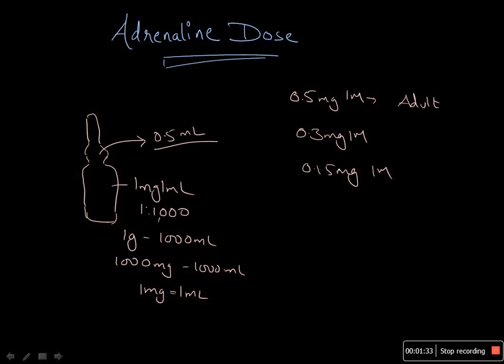Generally intramuscular route is preferred unless the experts are available, because intravenous route can create several complications if not diluted properly. For intravenous route, the dose is 50 micrograms in 1:10,000 dilution. Now the question is how to make 1:10,000 dilution.